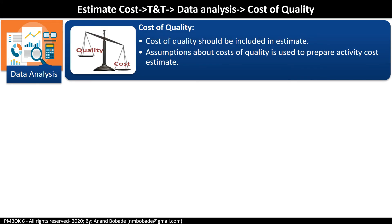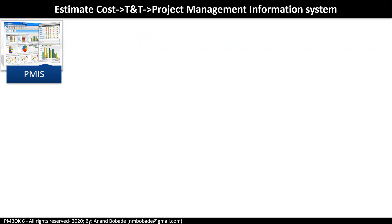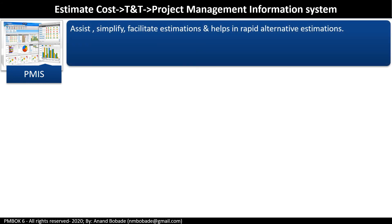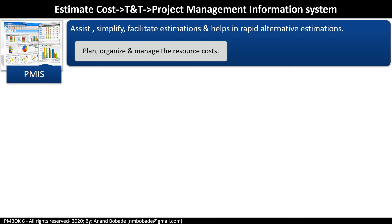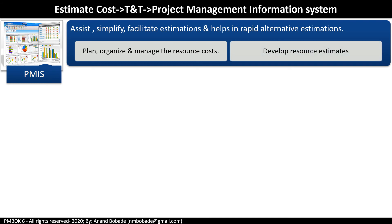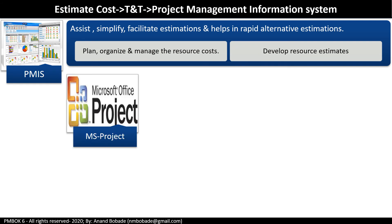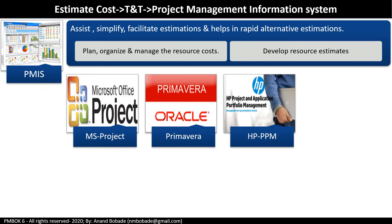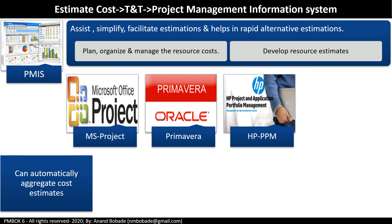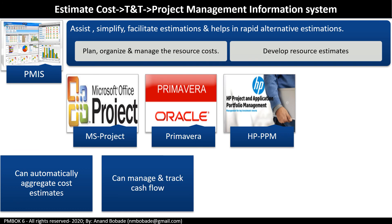Cost of quality should be included in estimates. Assumptions about the cost of quality are used to prepare activity cost estimates. Project management information systems (PMIS) are software tools that help project managers simplify and facilitate estimation and enable rapid alternative estimation. They help plan, organize, and manage resource costs and develop resource estimates. Well-known PMIS tools include Microsoft Project with SharePoint, Primavera, and HP Project Portfolio Management System. These tools can automatically aggregate cost estimates, help manage and track cash flow, and generate various reports.